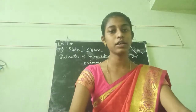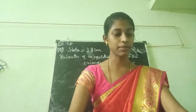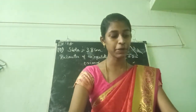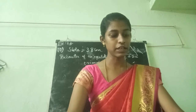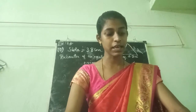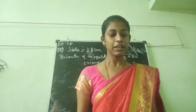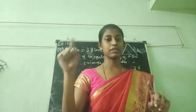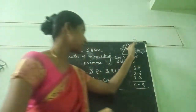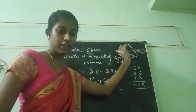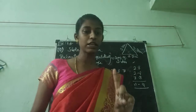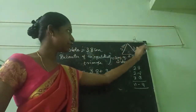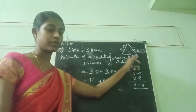Now I am going to tell about the 10th sum. I am reading the question: find the perimeter of an equilateral triangle which has sides measuring 3.8 cm. Equilateral triangle means all sides are equal. Since one side is given as 3.8 cm, all sides are 3.8 cm, 3.8 cm, 3.8 cm.